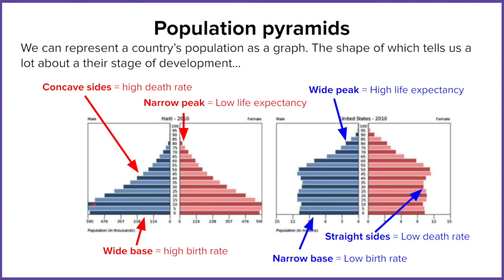Those concave sides — sides that dip in — indicate a high death rate, meaning a lot of those children aren't making it to older years. The wide base means there are lots of children being born, so a wide base equals a high birth rate. But not many people are reaching their sixties and above, telling us that life expectancy — the average age someone in Haiti is expected to live to — is quite low.